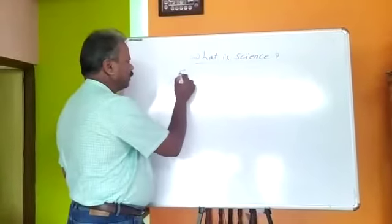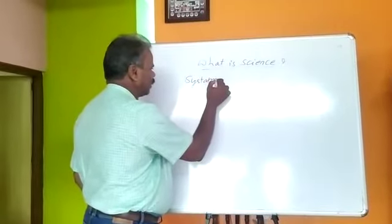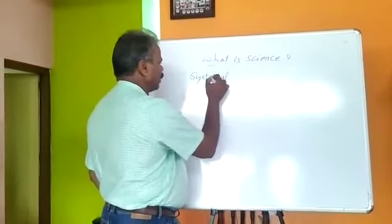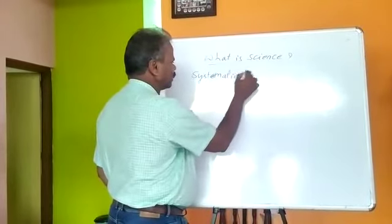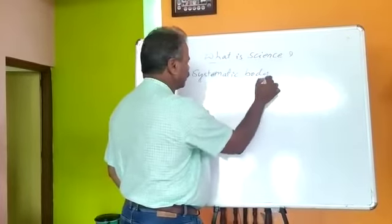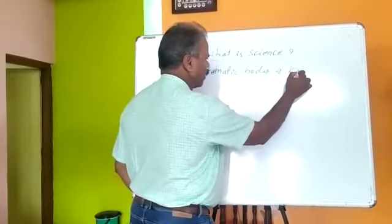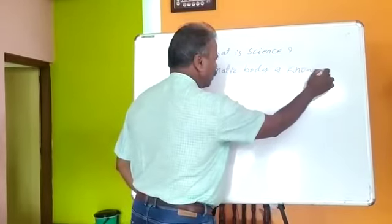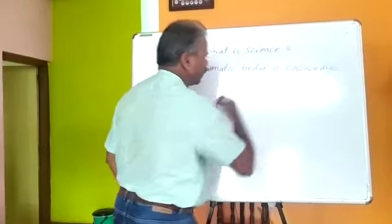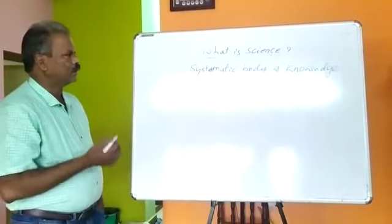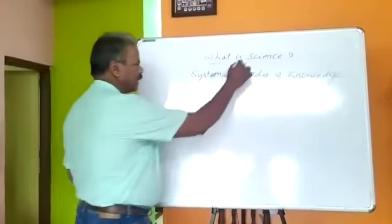Science is a systematic body of knowledge. Science has many branches like physics, mathematics, biology, and chemistry.